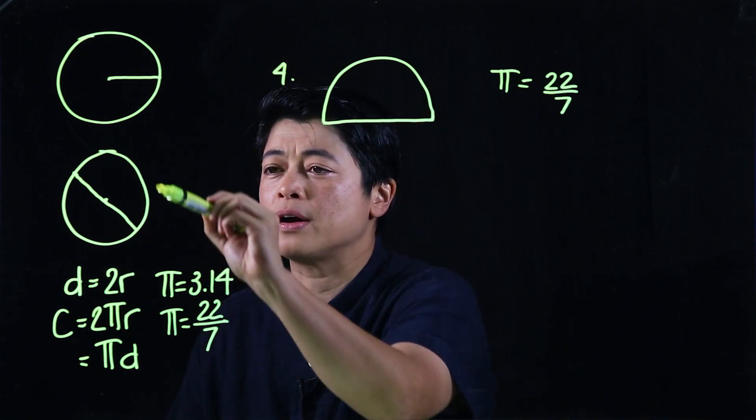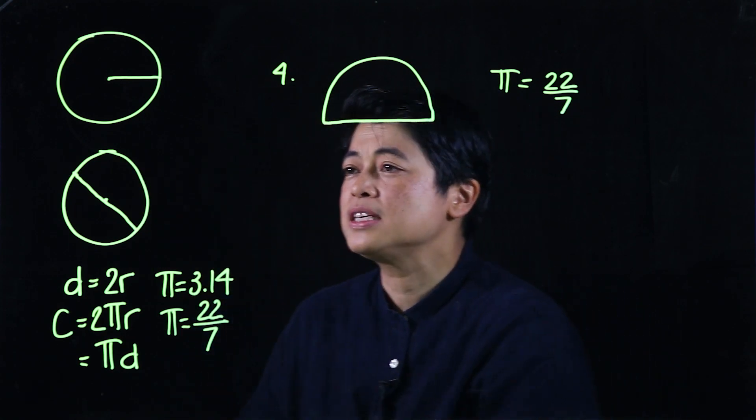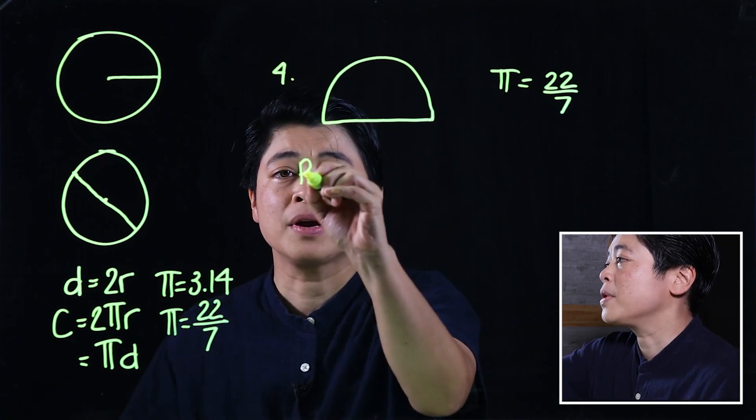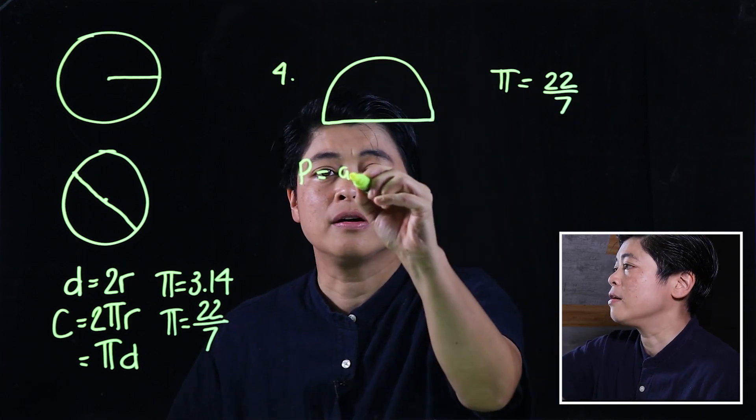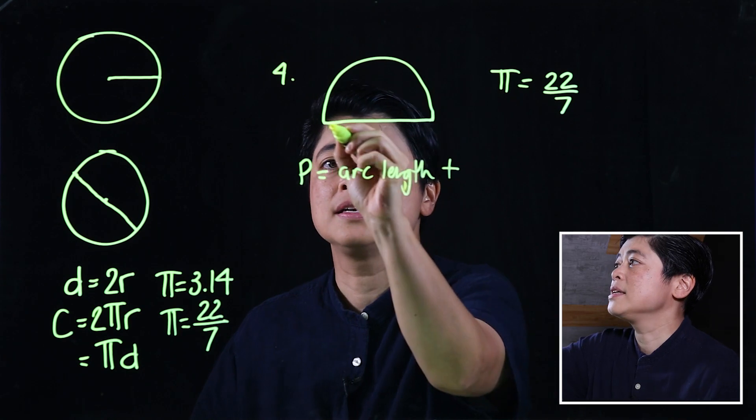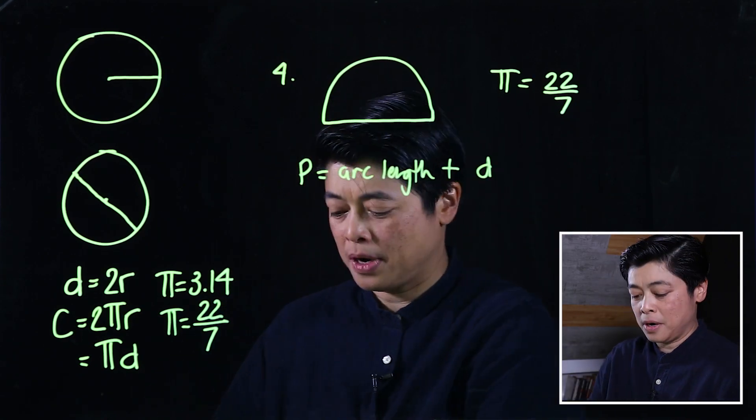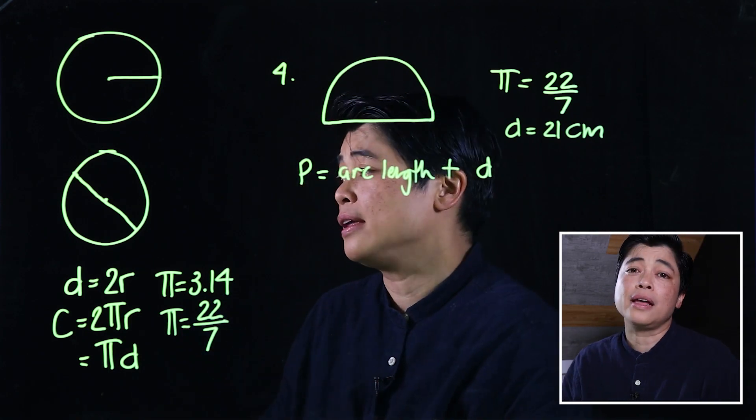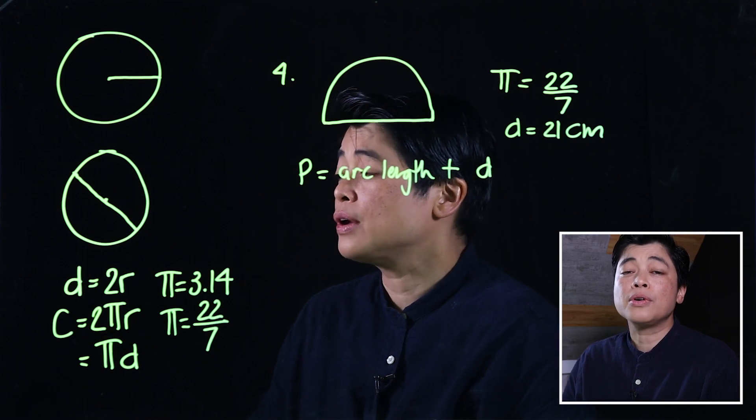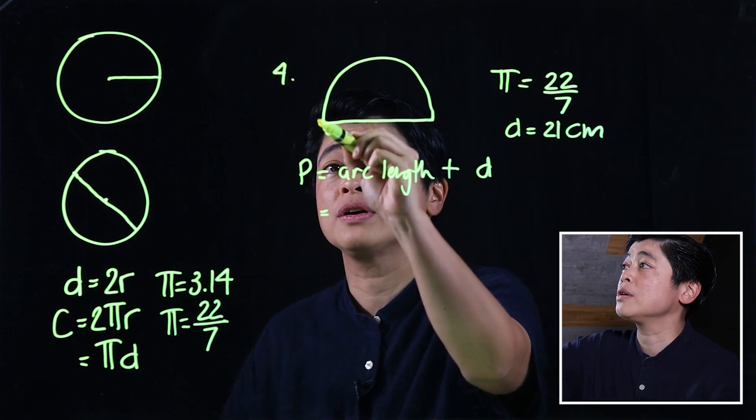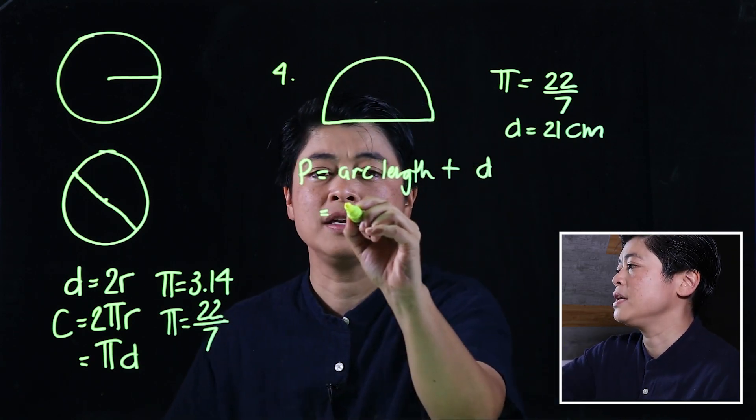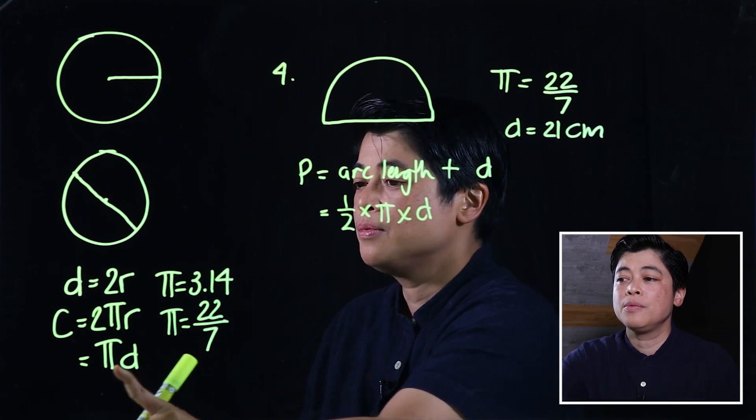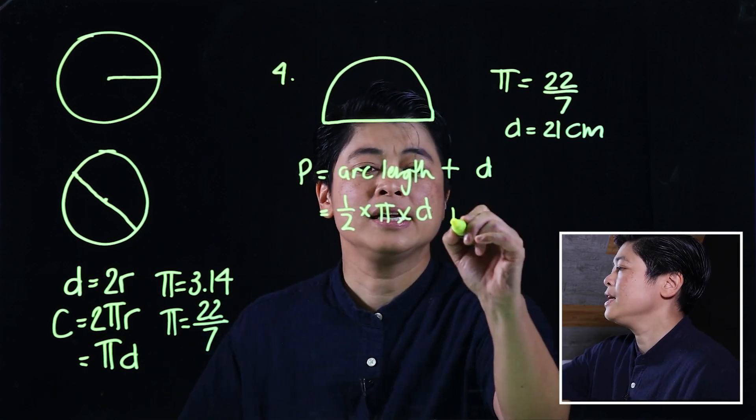Since they want us to use 22/7 as pi, they want us to solve computationally. I mentioned earlier that going around is the circumference, which means if you're just taking a portion of the circle outside, that's called an arc length. If we want the perimeter by words, that will be the arc length plus the diameter. The problem says the diameter is 21 centimeters. If we want the arc length, we're looking at half of a circle, so that means 1/2×π×d. Because we're given the diameter, we will use the πd formula.